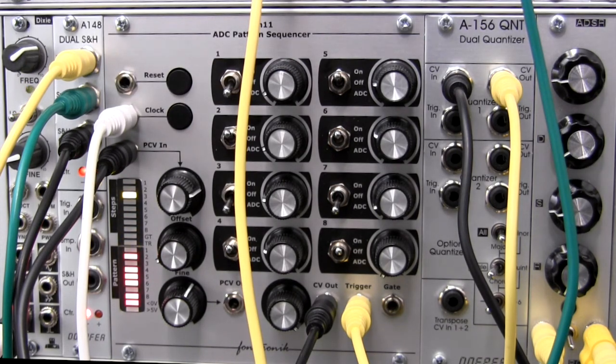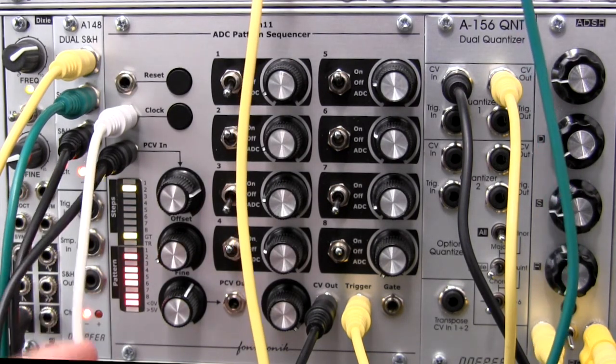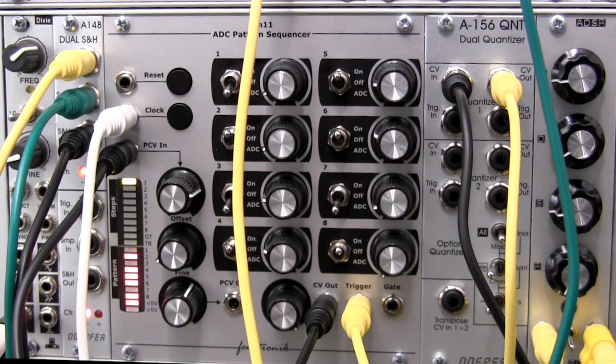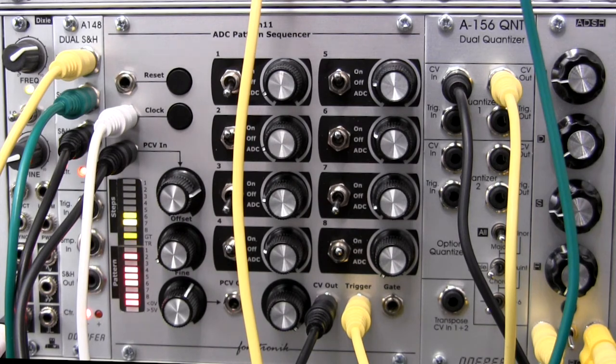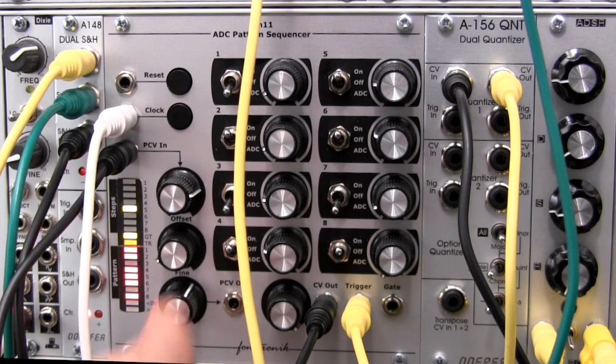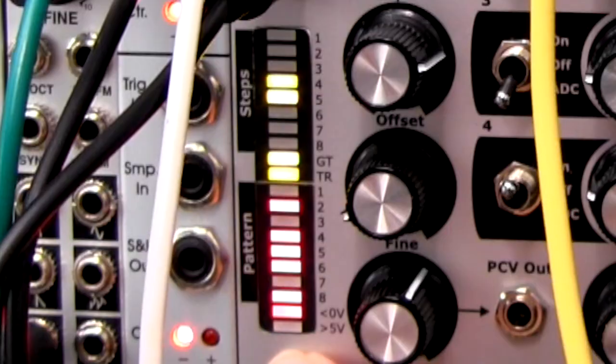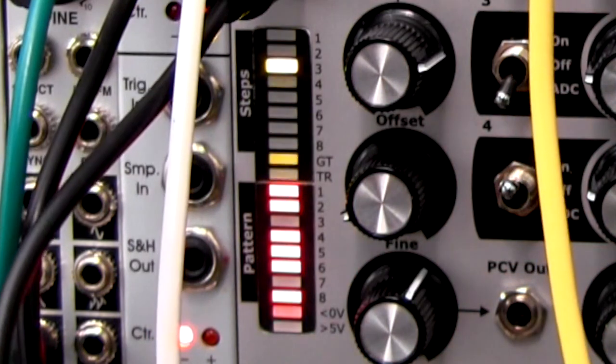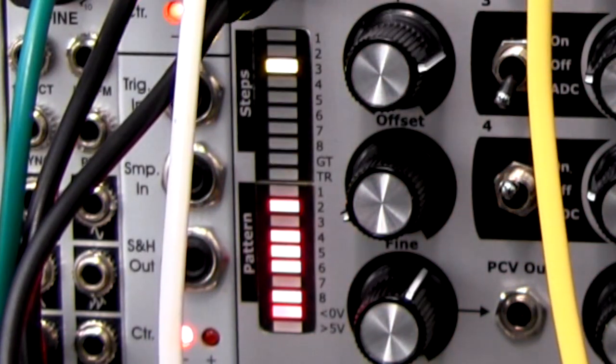You have the pattern control voltage patched in. And it's allowing you to automate your pattern at fixed intervals. It does recommend, I think it's on the website or in the manual, that a sample and hold is probably a good source to use. So usually, once you get the right level and you find your optimum range, you can get some fairly interesting results occurring with your ADC pattern sequencer.